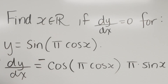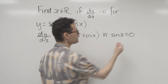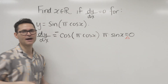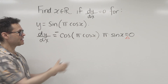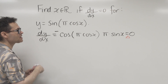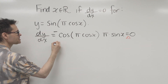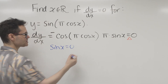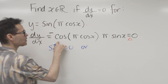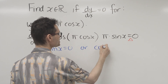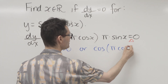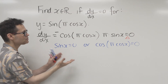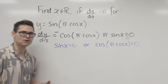I set that equal to zero. The objective is to figure out what values of x balance that equation. The negative pi doesn't matter — dividing both sides by negative pi keeps it in balance. This comes down to solving either sin(x) = 0 or cos(pi·cos(x)) = 0.